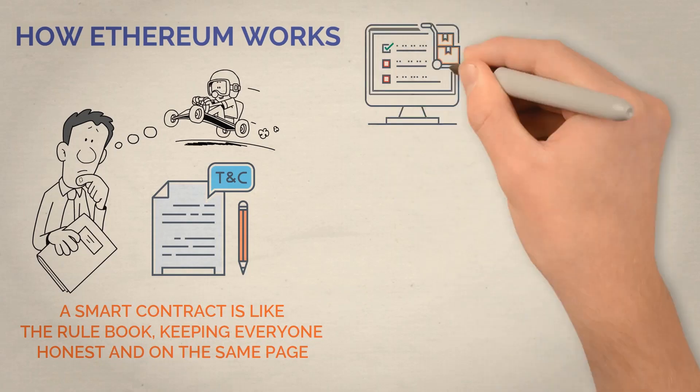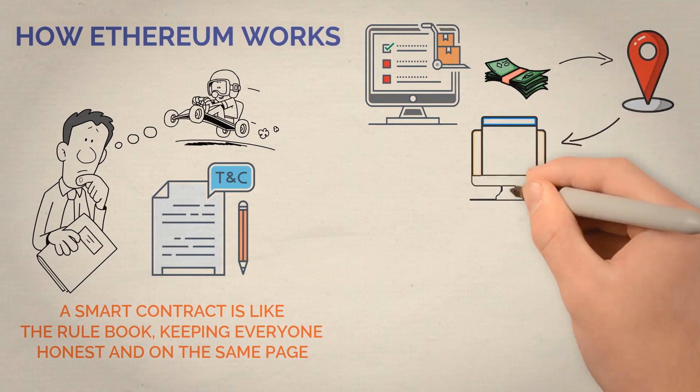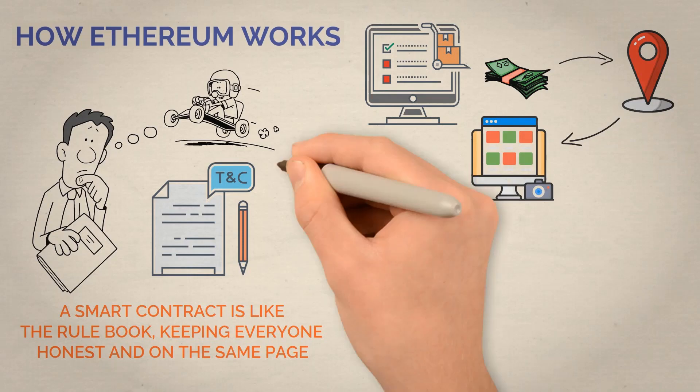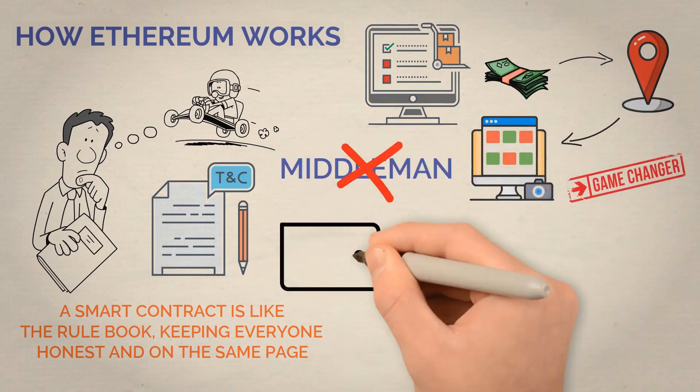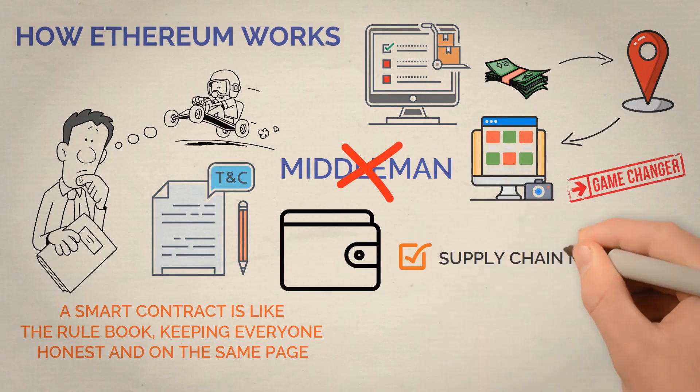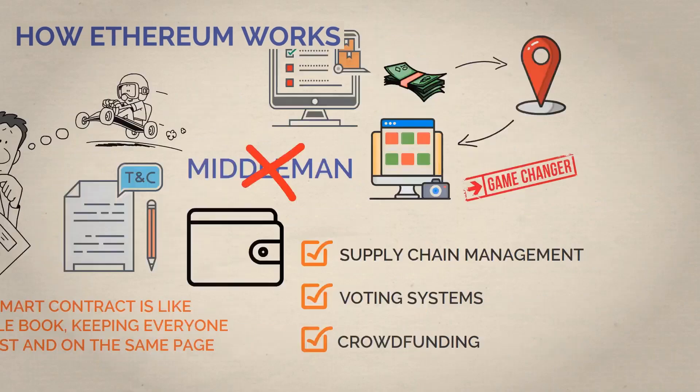For example, a smart contract can be set up for a sale so that when you send a certain amount of money to a specific address, it automatically sends you a digital asset in return without needing a middleman. It's a game changer for conducting transactions and agreements online. It can be used for things like supply chain management, voting systems, crowdfunding, and so much more.